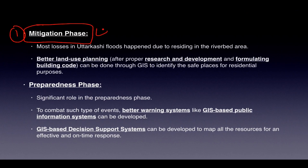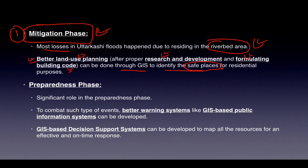Phase 1 is the Mitigation Phase, which decreases the impact or damages. Most losses in Uttarkashi happened because people were residing in the riverbed area. Better land use planning could have been done — requiring R&D and building codes — and GIS can be used to identify safe places for residential purposes.